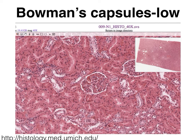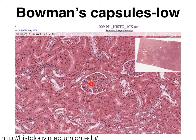With the 10x objective lens we begin to focus on this little structure here. This structure consists of the Bowman's capsule, which is shown here with the white lumen in it, and inside we find the little capillary bed that the Bowman's capsule hugs. This will make a lot more sense when we take a look at a higher magnification on the next slide.